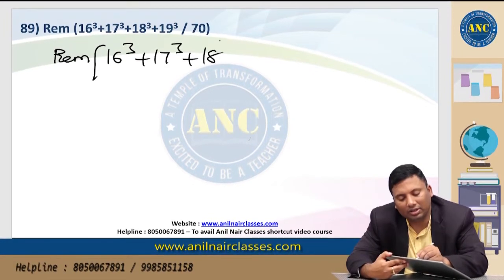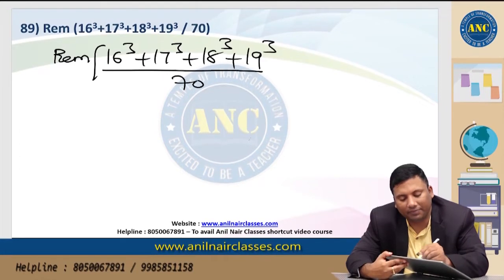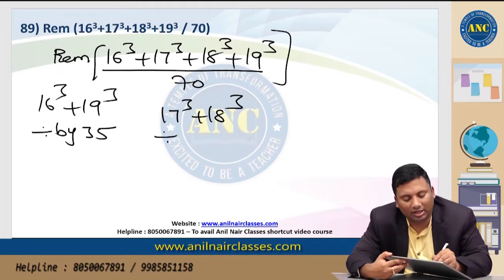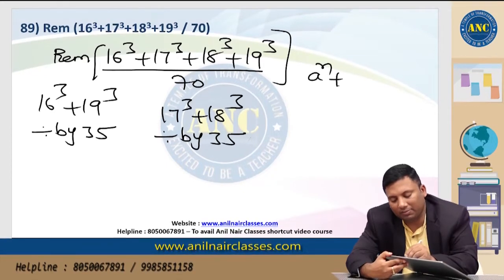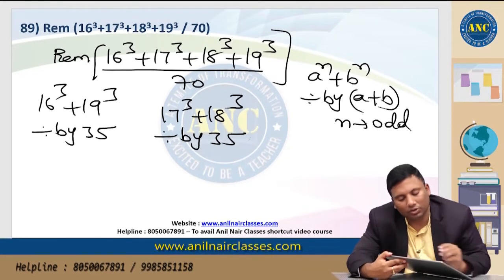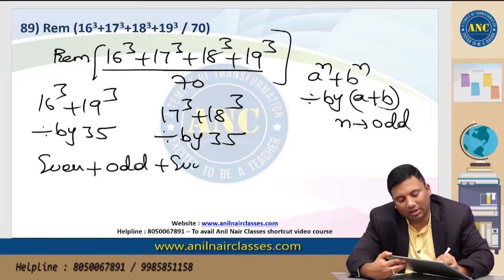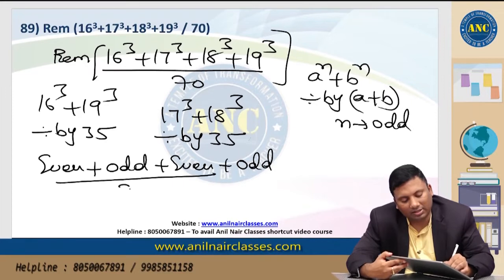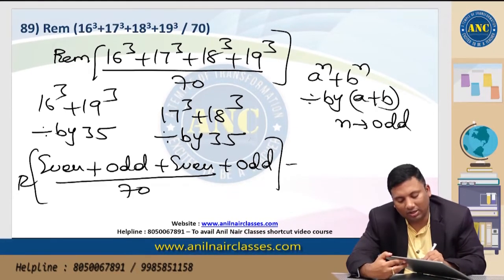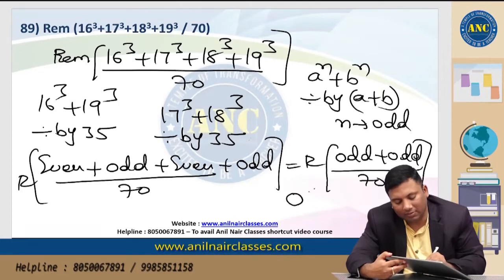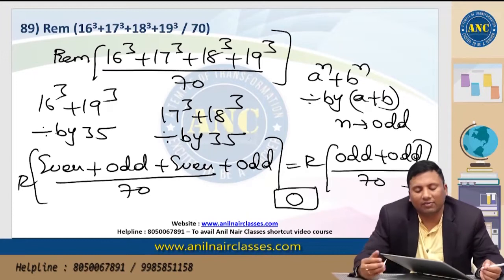89th problem: (16^3 + 17^3 + 18^3 + 19^3) divided by 70. Now 16^3 + 19^3 is divisible by 35, because a^n + b^n is divisible by (a + b) if n is odd, and 16 + 19 = 35. Similarly 17^3 + 18^3 is divisible by 35. 16 is even, 17 is odd, 18 is even, 19 is odd. Even + odd = odd, and odd + odd = even. So the sum is even. An even number divisible by 35 is divisible by 70. Remainder is 0.